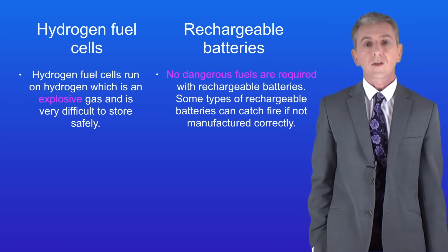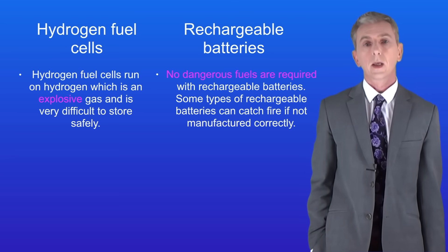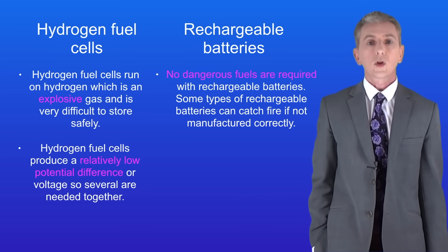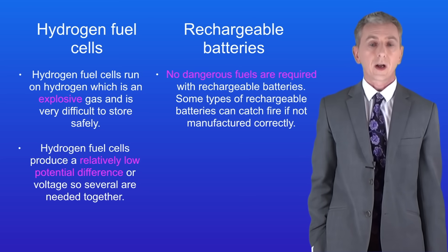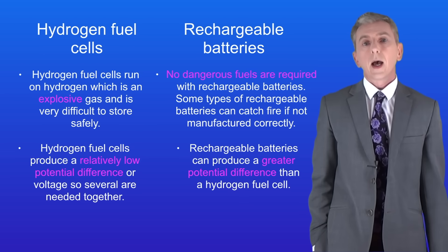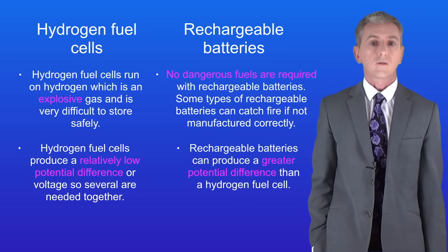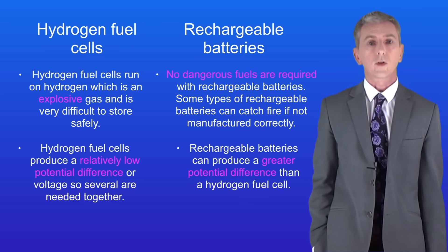That said, some types of rechargeable batteries can catch fire if they're not manufactured correctly. Hydrogen fuel cells also produce a relatively low potential difference or voltage, so several are needed together. Rechargeable batteries can produce a greater potential difference than a hydrogen fuel cell.